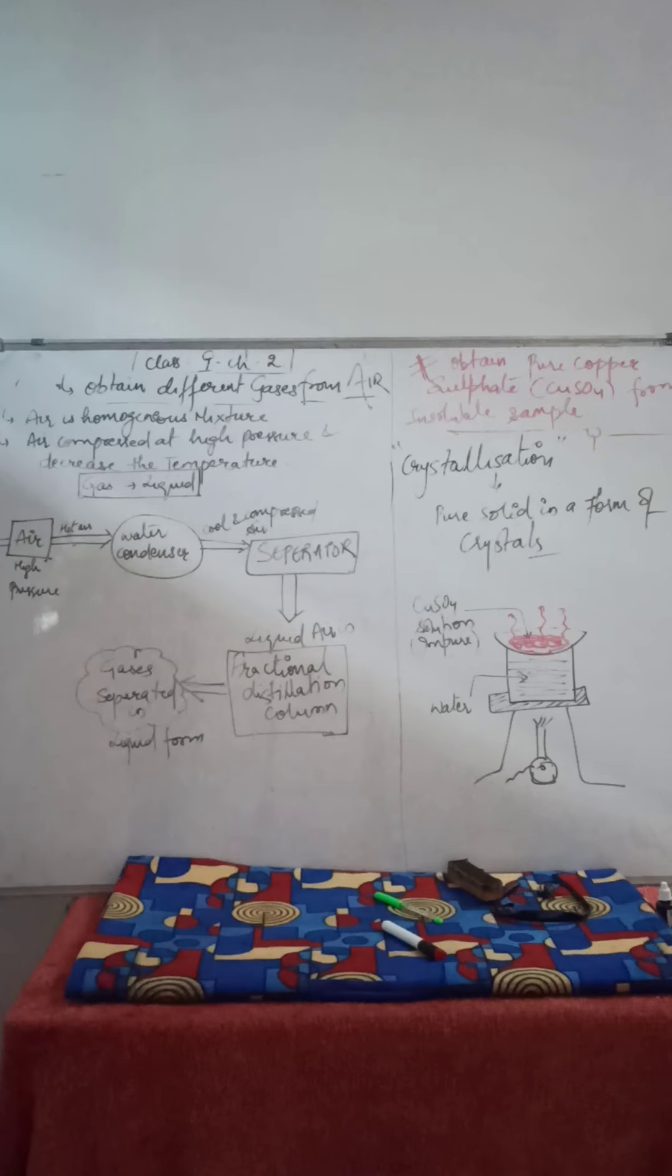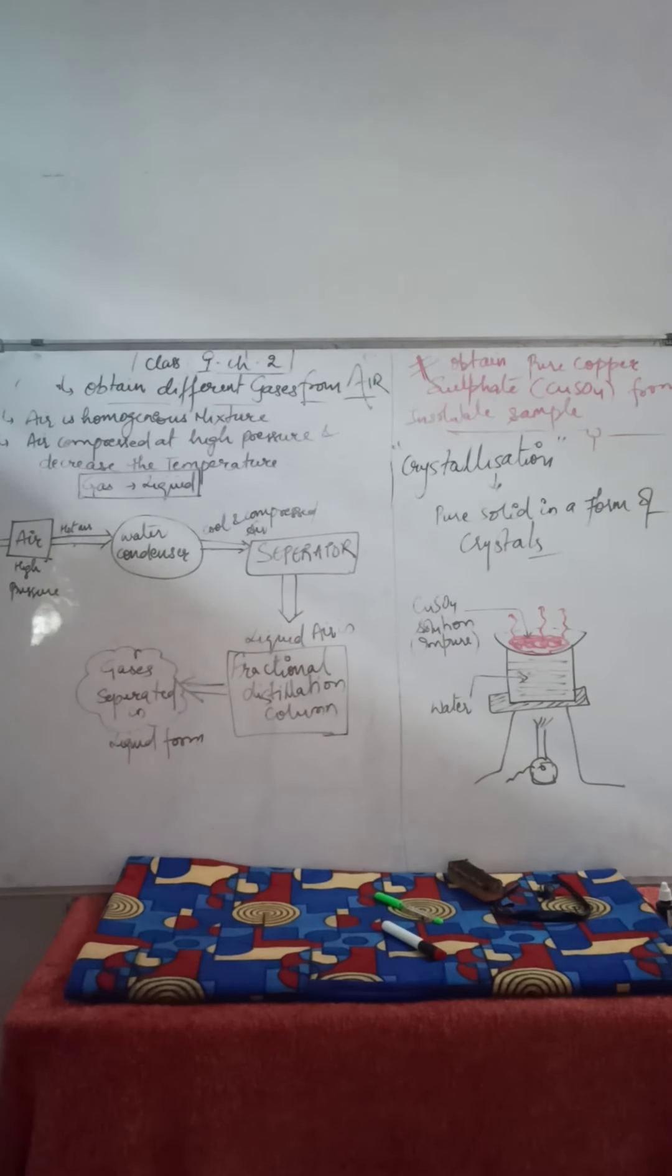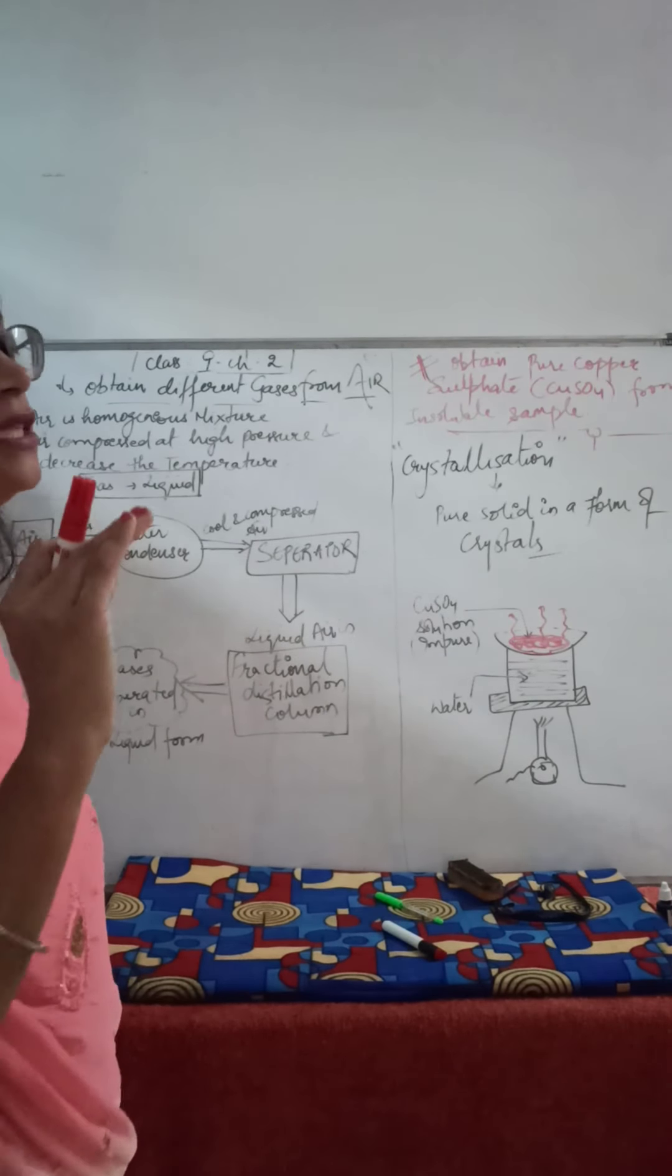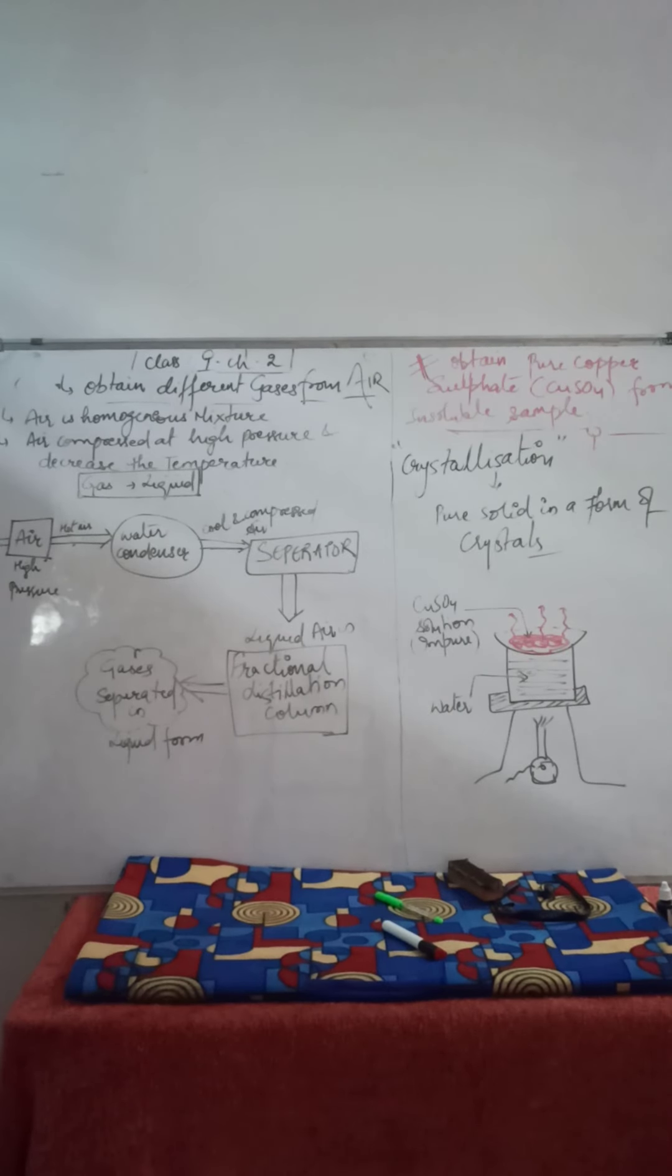They form a homogeneous mixture. In air, we cannot see the separation boundary between these different gases. That is why they are homogeneous mixtures. Air has different types of gases present at different boiling points and they form a uniform homogeneous mixture.